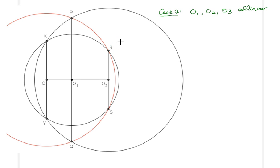We're already done with the first case where O1, O2, O3 form a degenerate triangle, and from there we were able to show that O3, the center of the third circle, the circumcircle of quadrilateral PQRS, would lie on the line XY.